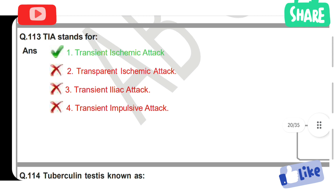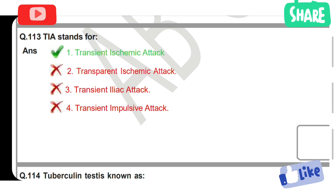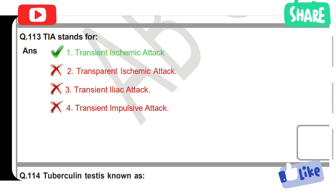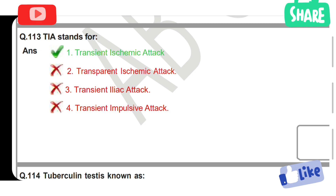TIA stands for: Option 1: Transient ischemic attack. Option 2: Transparent ischemic attack. Option 3: Transient iliac attack. Option 4: Transient impulsive attack. Option 1 is the correct answer — TIA stands for transient ischemic attack.